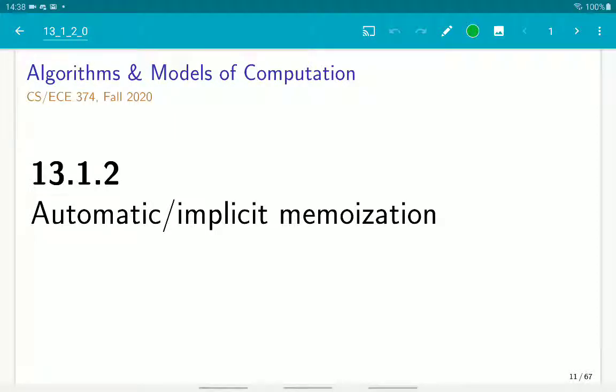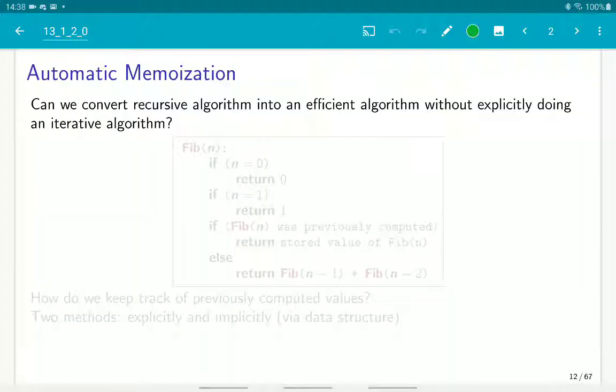Okay, so how this memoization mechanism works when we have a recursive function. There are essentially two ways to do it, explicit and implicit.